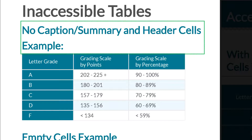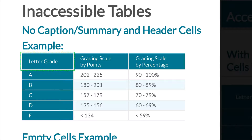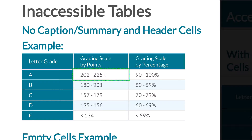That means you don't have to keep track of which column you're in. In this case we have: letter grade, grading scale by points, grading scale by percentage. If I hit the down arrow to go to the next row, we get the letter grade A, the points, and the percentage. But this is only three columns — imagine if we had 20 columns and were trying to track each column name. There's no way, and this is what's happening here.